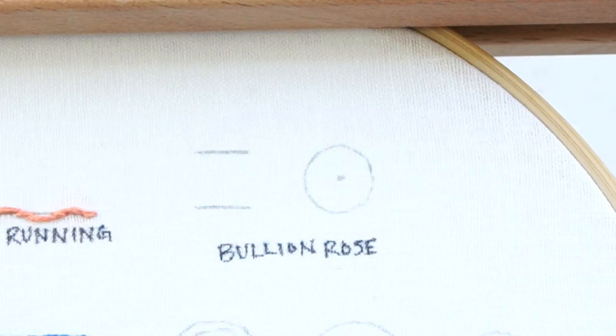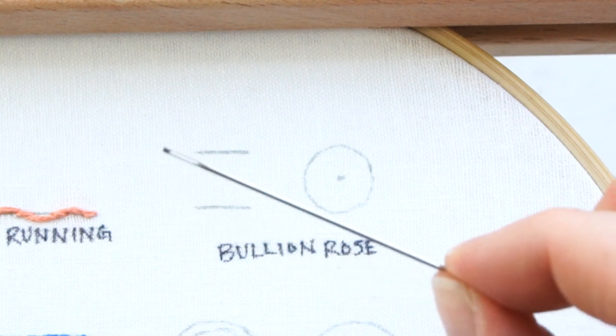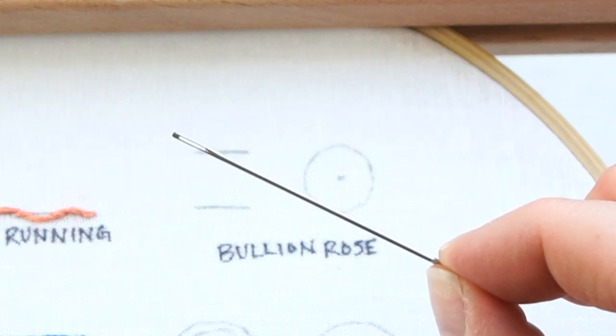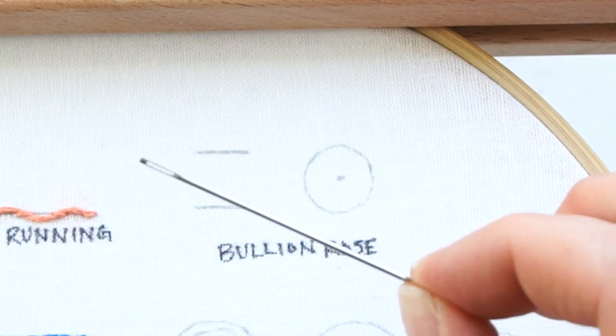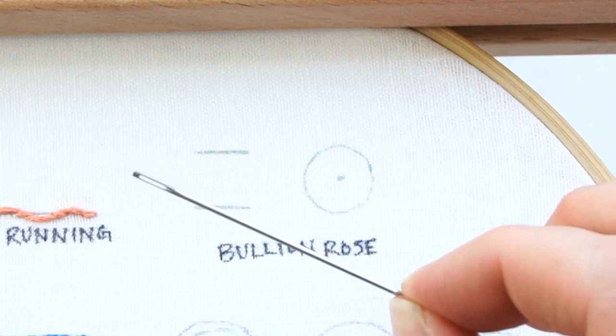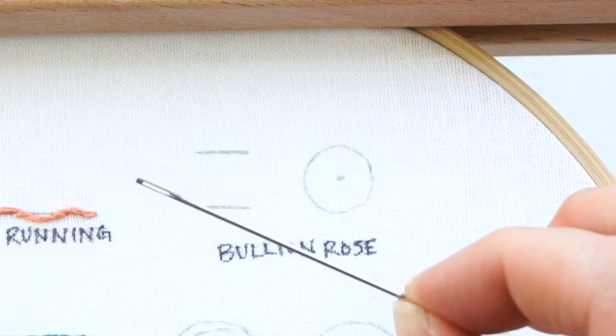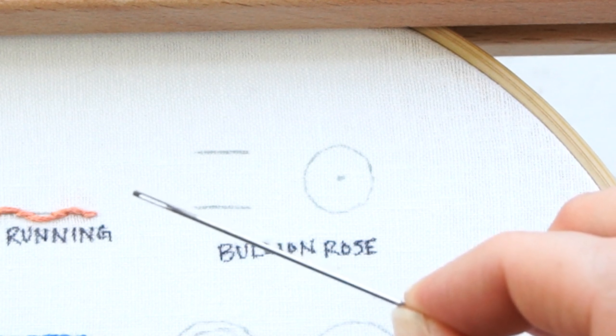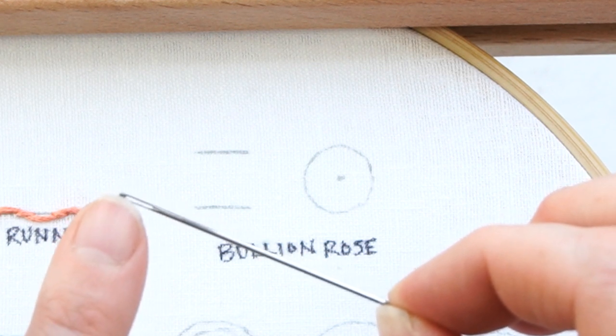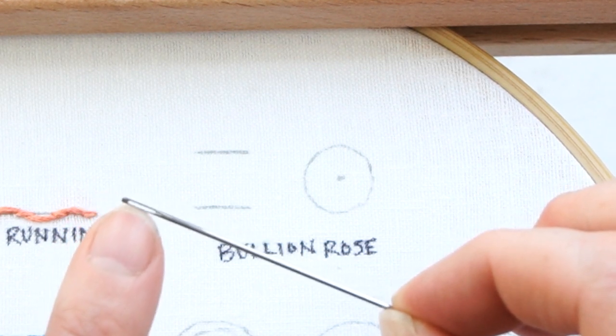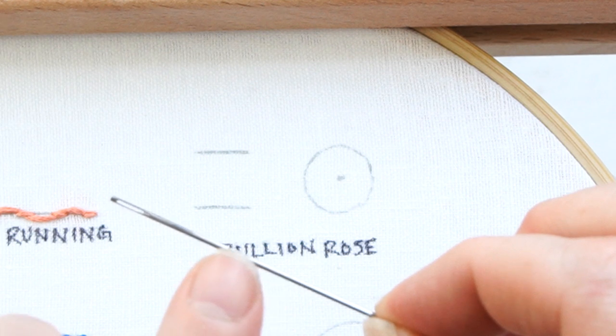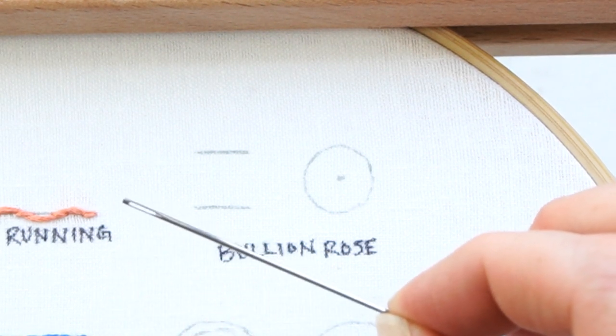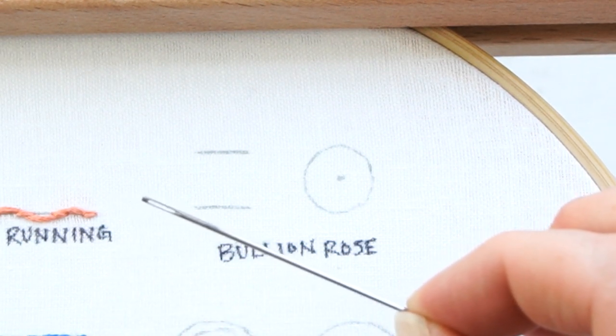To make a bullion knot rose, you'll need a different kind of needle than you usually use for embroidery. This one is specially made for bullion knots. You can also get a milliner's needle. The difference between regular embroidery needles and these needles is that the eye of the needle is the same width as the rest of the needle, which makes it a lot easier to pull through.